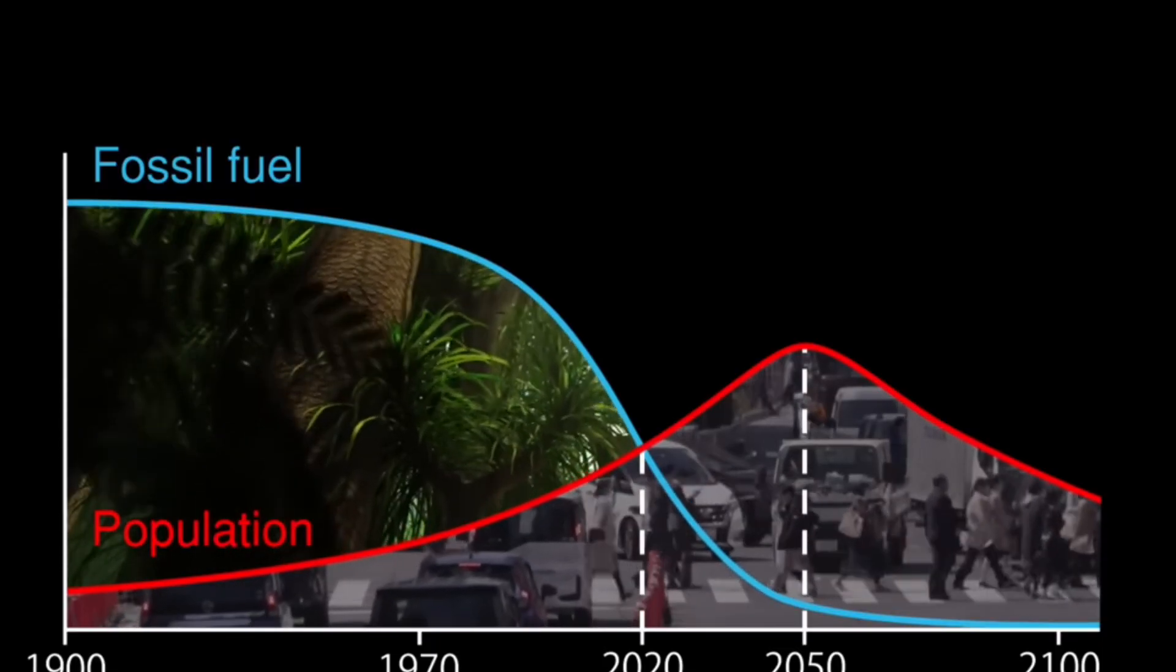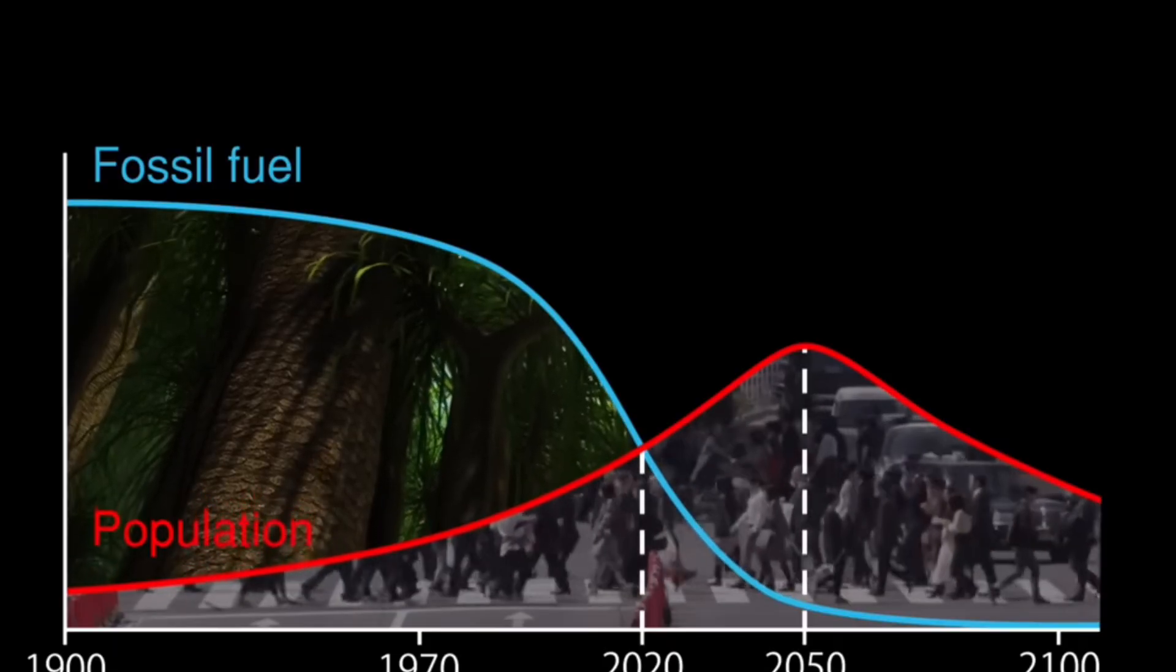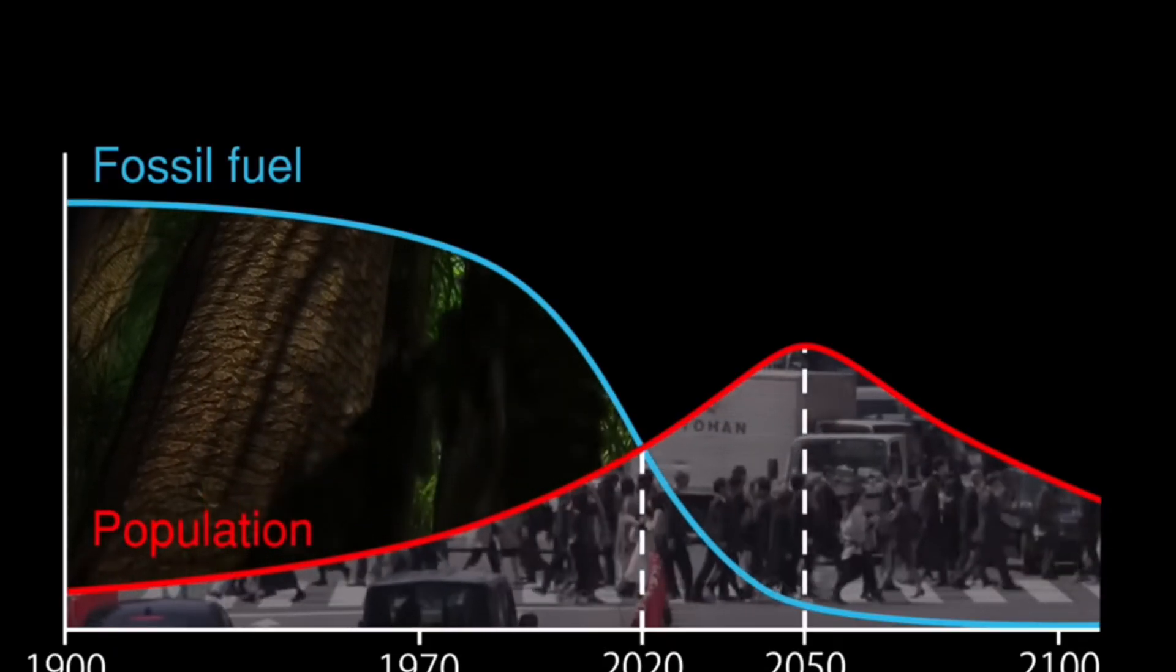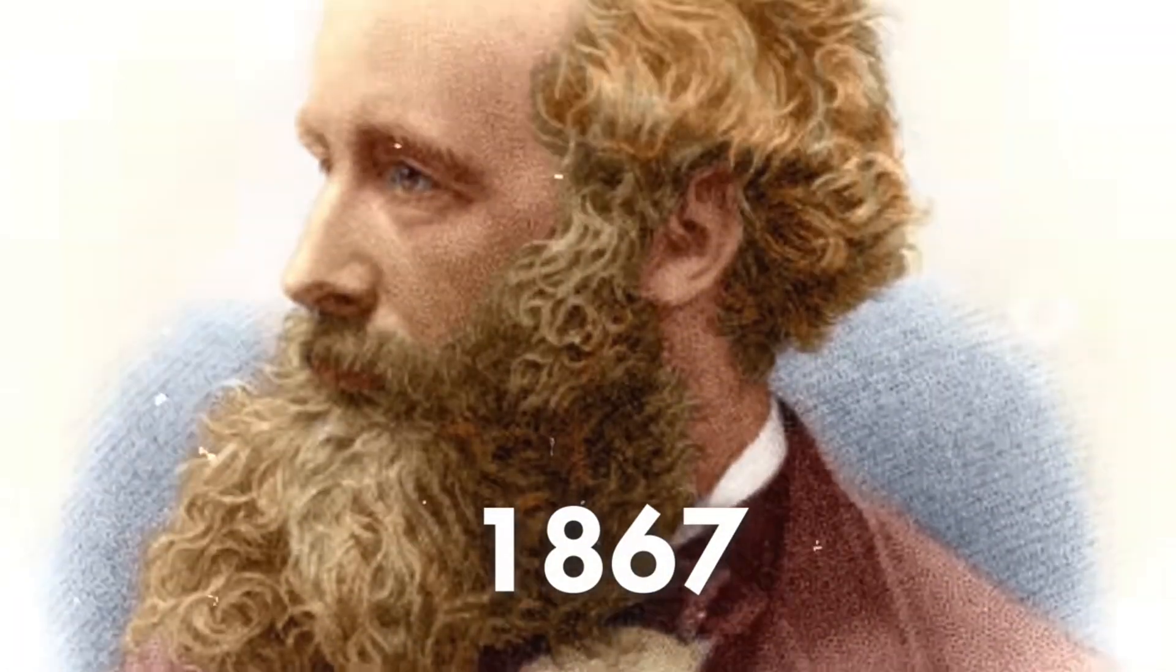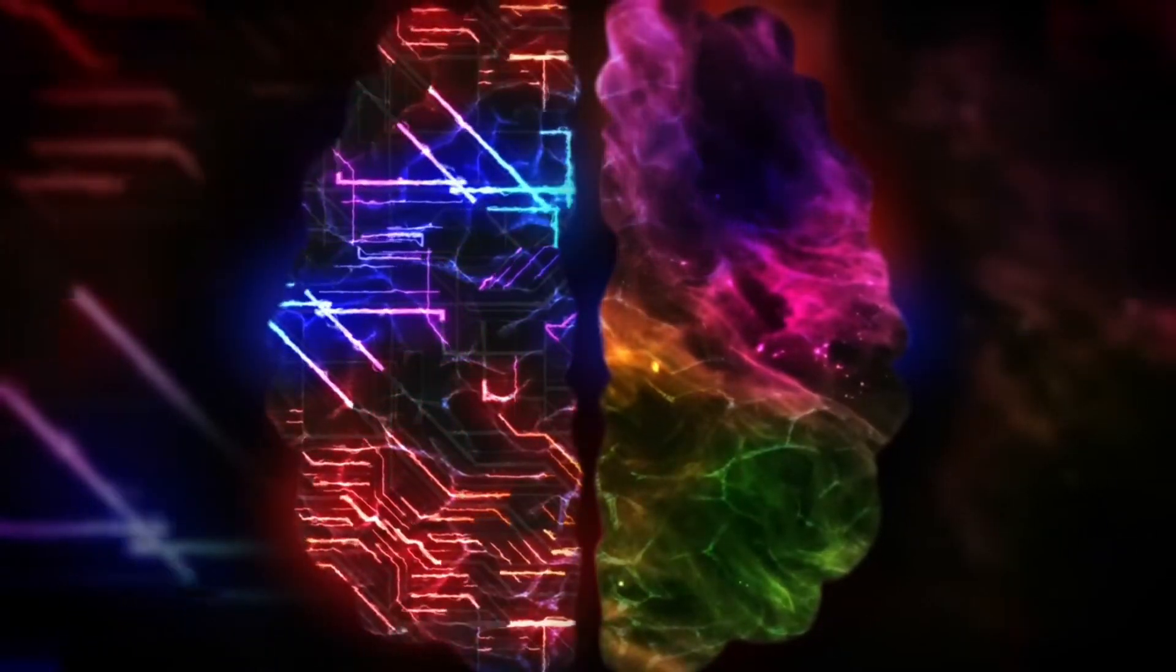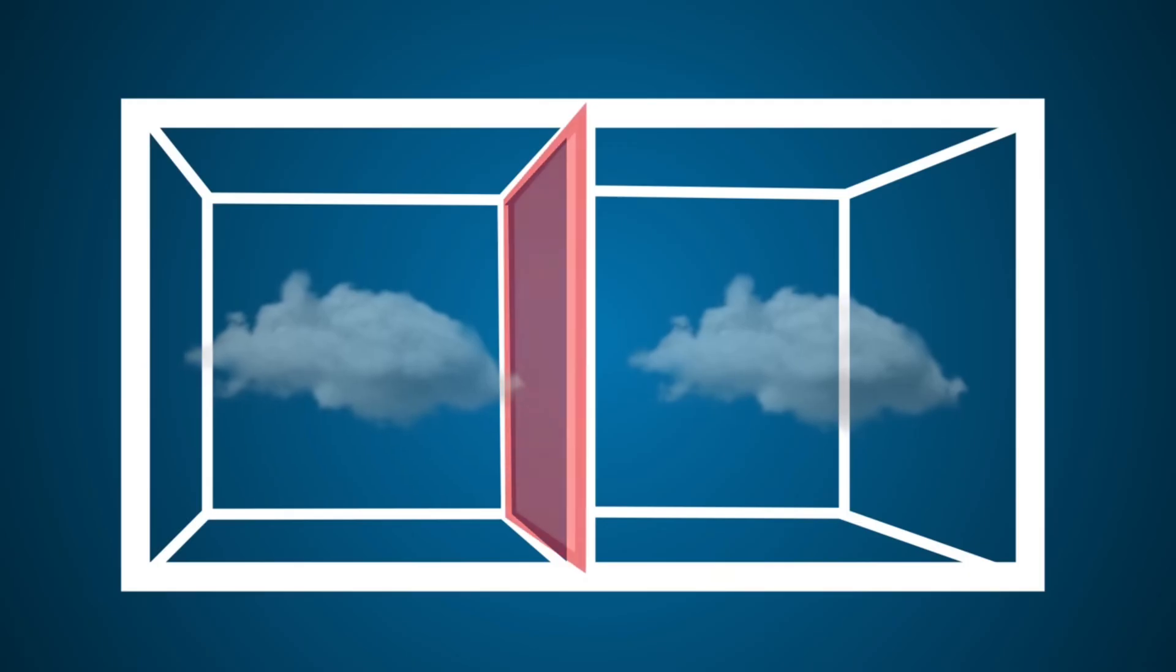...which could then connect with advancements in other specialized fields to produce entirely new technologies. Unlike many resources, knowledge isn't depleted when it's used—in fact, it often grows. Each generation builds on the knowledge of those before, and the more we know, the more we're able to discover. This accumulation of knowledge has led to exponential growth, especially in fields like computing, where Moore's Law—the observation that the number of transistors on a microchip doubles approximately every two years...